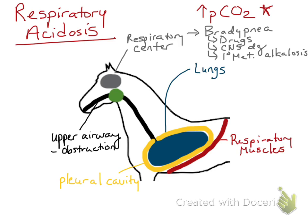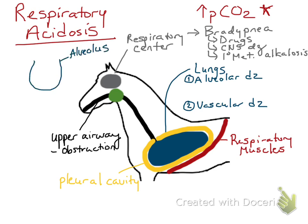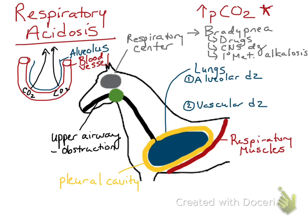Going over to the lungs, there are actually two different sources for lungs causing respiratory acidosis. The first is alveolar disease, and the second is vascular disease, either within the lungs or originating from the heart. So I'm really representing the cardiopulmonary system here. I'm going to draw an alveolus and its blood supply — the capillary that delivers carbon dioxide to the alveolus to be exhaled. If there is a respiratory acidosis, less carbon dioxide is diffusing from the blood into the alveolus to be exhaled.